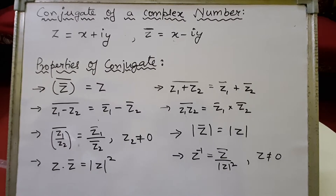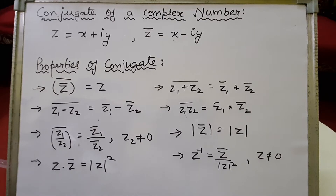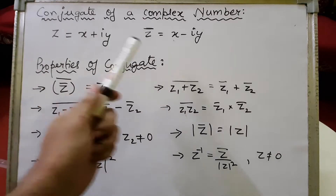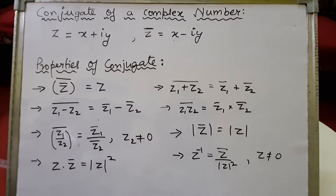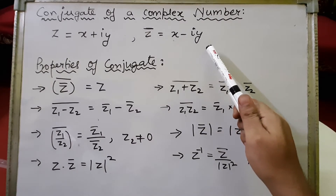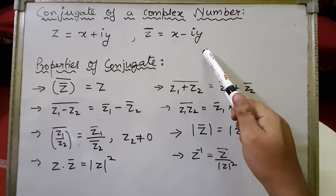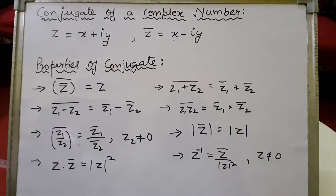Now let's understand the conjugate of a complex number. For any complex number z equals x plus iy, z-bar represents the conjugate of z. So z-bar equals x minus iy, meaning the conjugate of z is x minus iy.